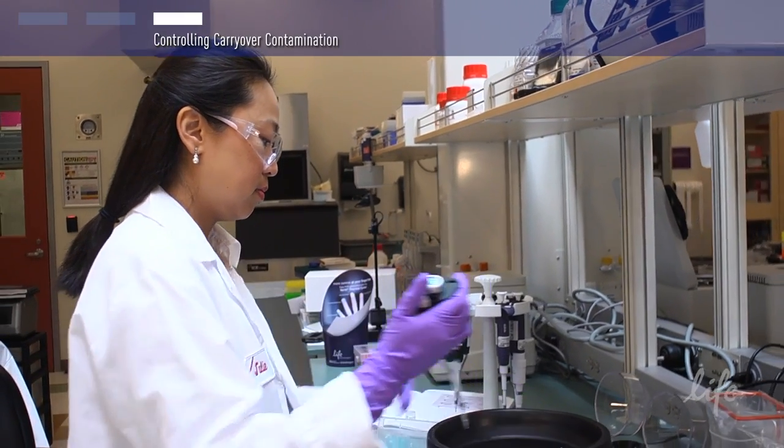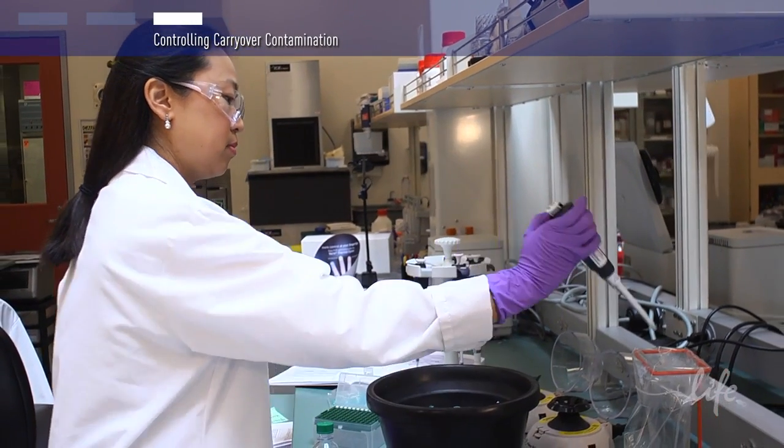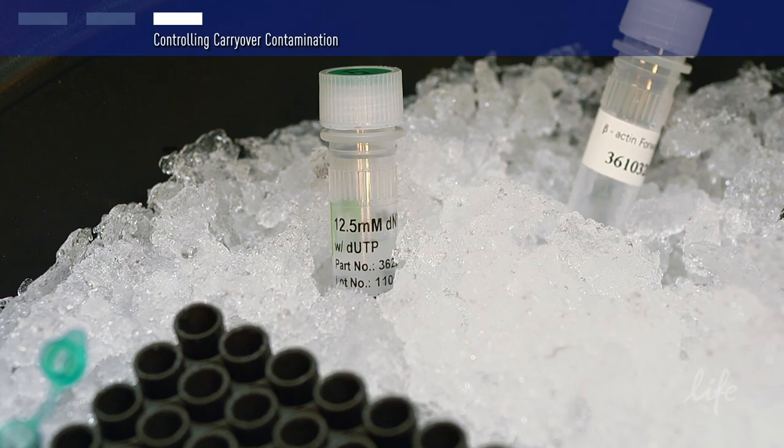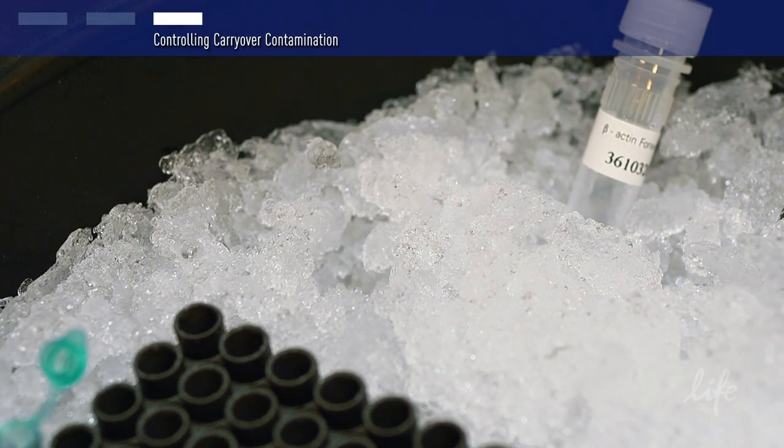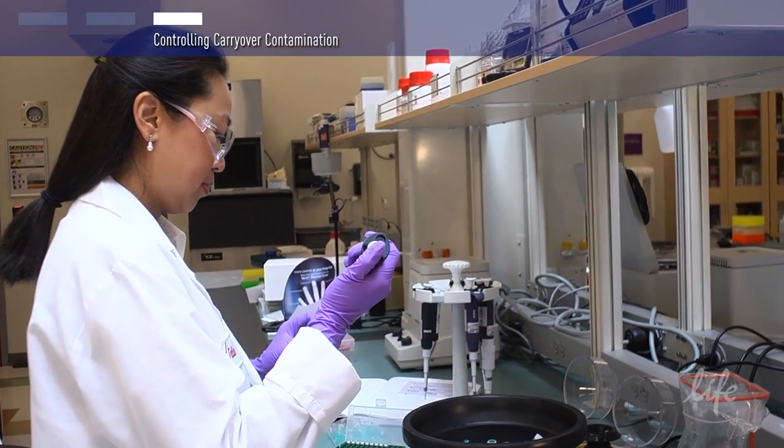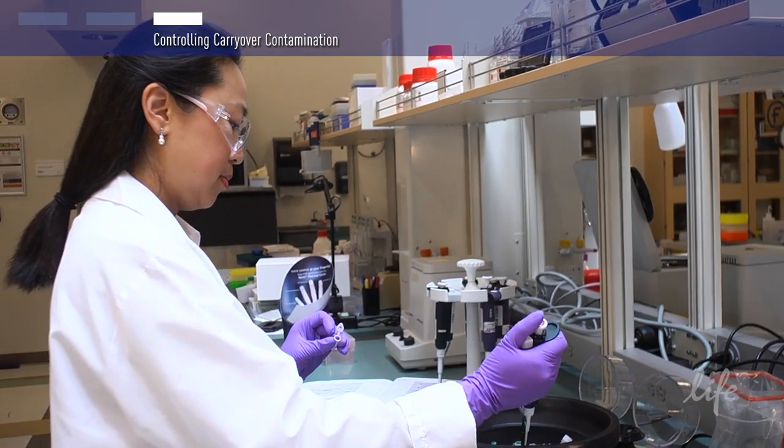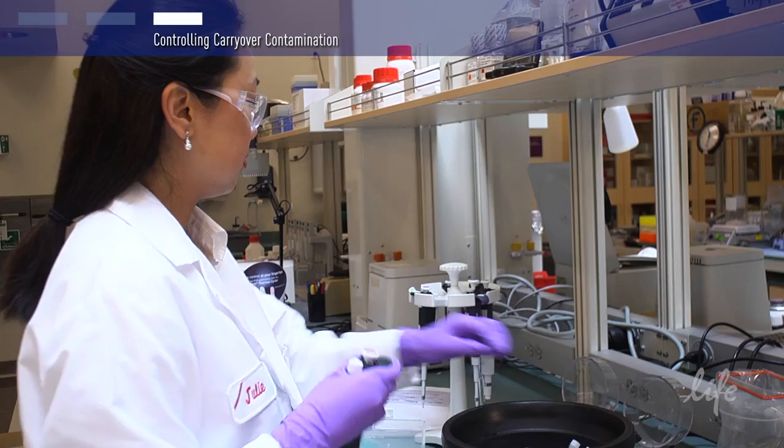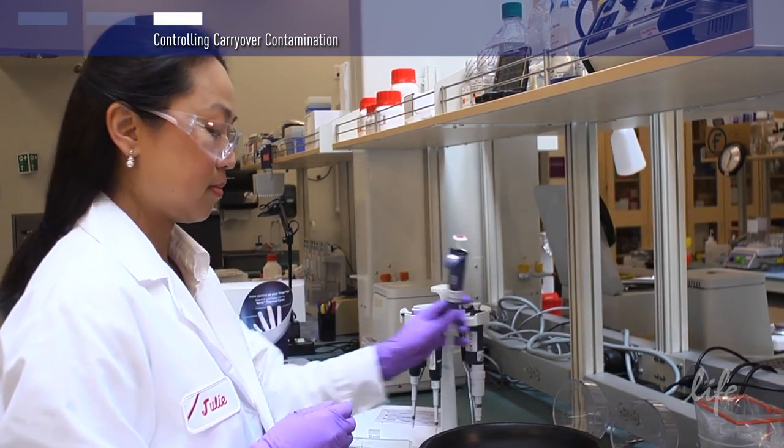If you suspect template DNA is carried over from a previous reaction, you can control carryover contamination. Carryover DNA can be degraded by generating PCR products using dUTP instead of dTTP. Set up your PCR reaction replacing dTTP with dUTP. This ensures that any PCR product will contain uracil.